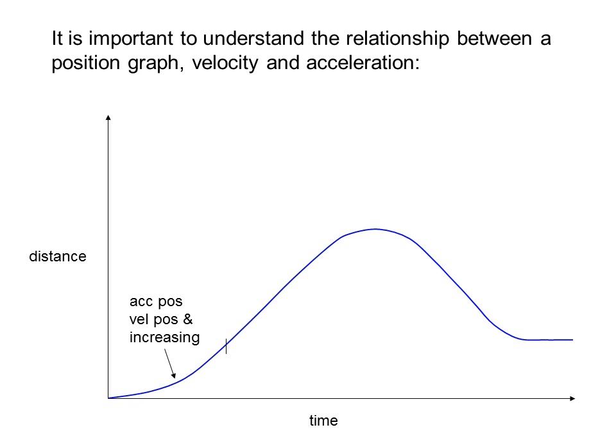In the first section, acceleration is positive, velocity is positive, and increasing. We can tell that acceleration is positive because the position graph is concave upward, and the velocity is positive because the slope is positive.